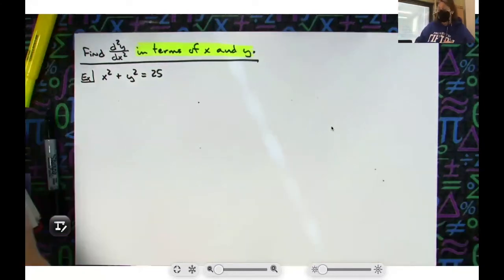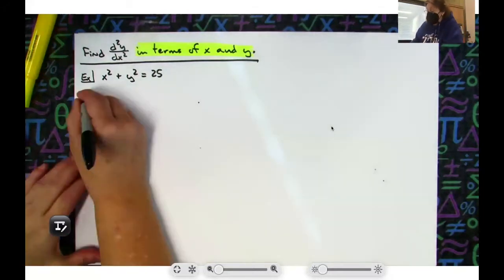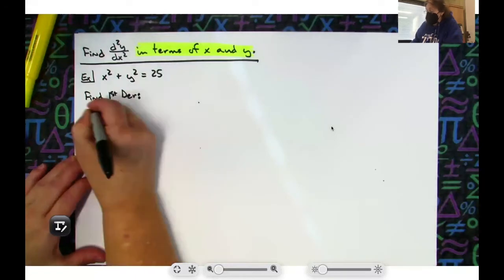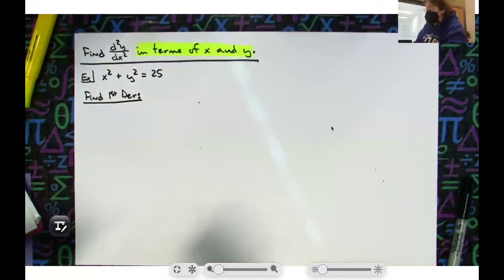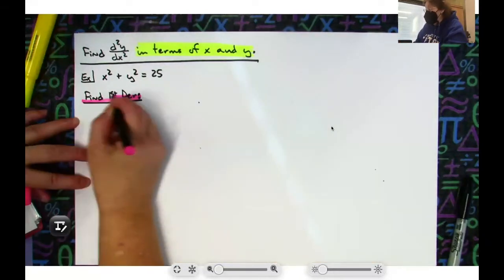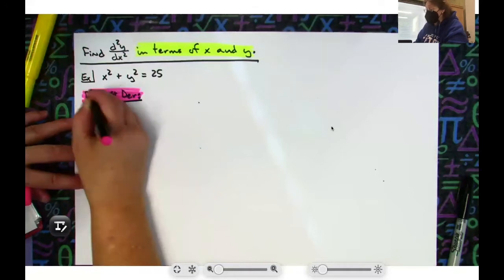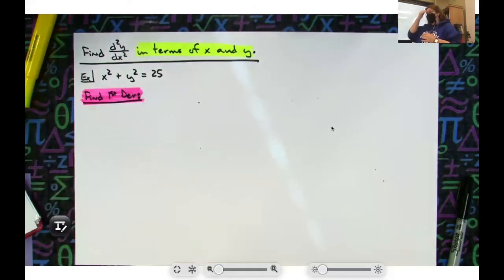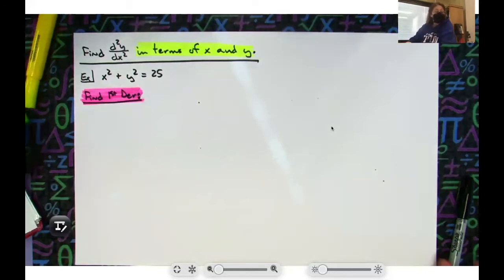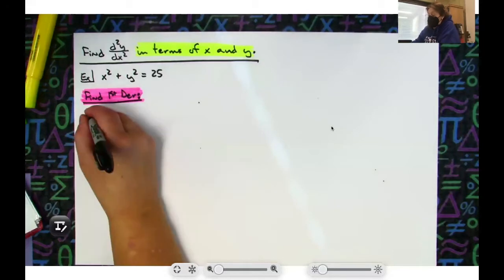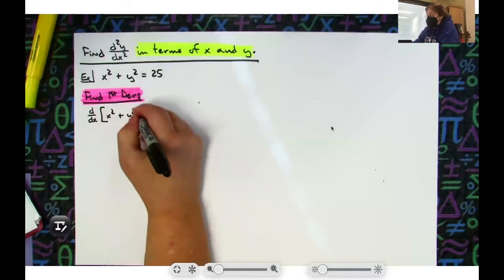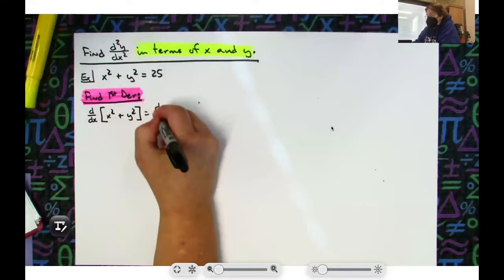Now we're going to clearly identify our steps. Our first step is going to be find first derivative. You're going to label all your steps. This is one of those where you'll have three or four steps, and memorizing those steps will guide you as to what you're supposed to do. So we'll show the notation: d/dx of x squared plus y squared is equal to d/dx of 25.